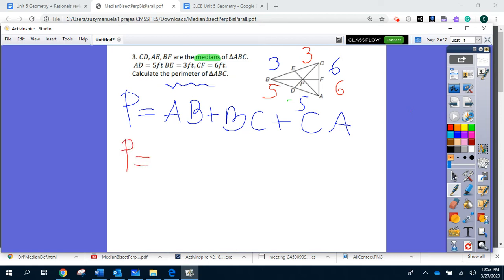In conclusion, the perimeter will be AB, that is five plus five. Because the distance from A to B is five plus again five, plus in the similar manner BC is three plus three, plus the last one CA six plus six.